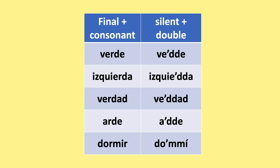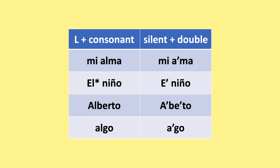And since in some dialects they don't pronounce the R in the syllable-final position, they'll also not pronounce the L in that position, because they mix together. So instead of 'mi alma' they would say 'mi ama', 'el niño' becomes 'e niño', 'Alberto' becomes 'Abeto', 'algo' becomes 'ago'. The sound of the following consonant is doubled in this case.